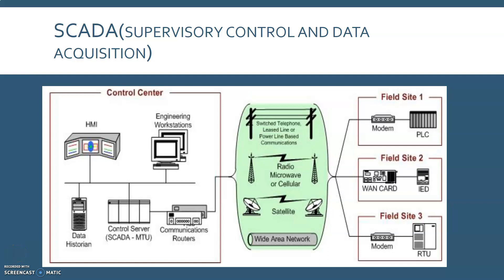Hello everyone, I'm Abbasud and welcome to my course on List 882, corresponding to ICS security — that is Industrial Control System security. In today's session we will be discussing SCADA systems. As we have looked into ICS, there are majorly three types of systems: the SCADA system, DCS system, and PLC system. Today we will be covering SCADA in more detail.